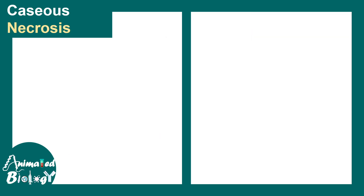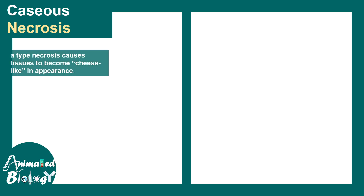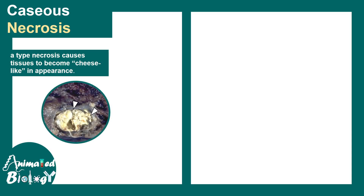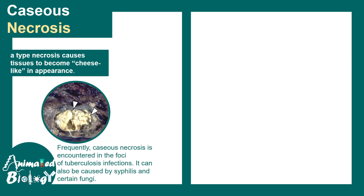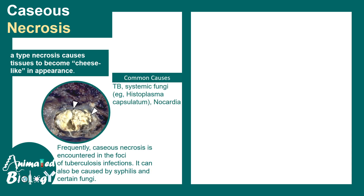In caseous necrosis, a prominent cheese-like appearance is visible. This necrosis is caused by bacterial infections like TB, and can also be due to systemic fungal infections such as Histoplasma or Nocardia infection.